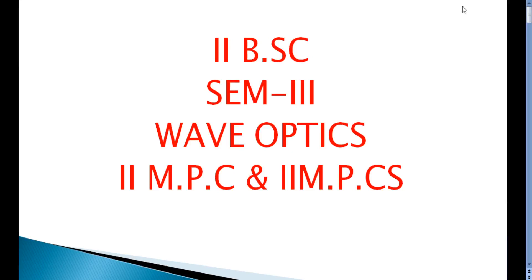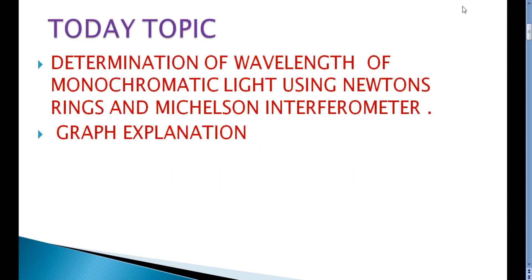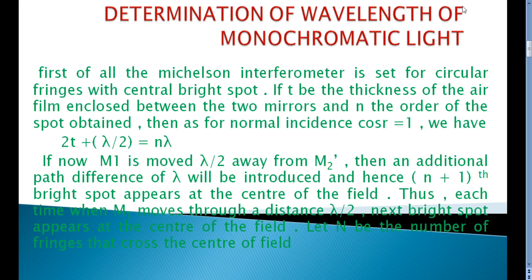Today my class is for 2nd BSc, Physics Combination Groups. Today my topic is about the determination of wavelength of monochromatic light using Newton's rings and Michelson interferometer. I will explain both experiments and calculate the wavelength of given light.